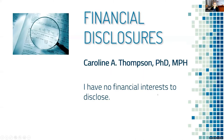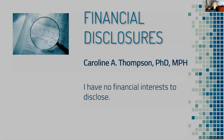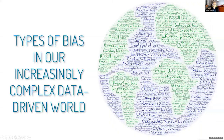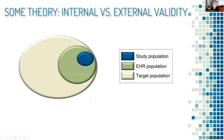I have no financial interest to disclose. I'll acknowledge funding at the end of the presentation. The primary purpose of my talk is to discuss population-based registry linkages and how we use them to better understand and reduce bias in our research. I'll start with some theory from the epidemiology and causal inference literature. In our increasingly complex data-driven world, there are many types of bias—Berkson bias, collider bias, admission bias, selection bias—and they keep expanding. In epidemiology, thanks primarily to the causal inference literature, we've tried to subsume biases into a simple ontology.